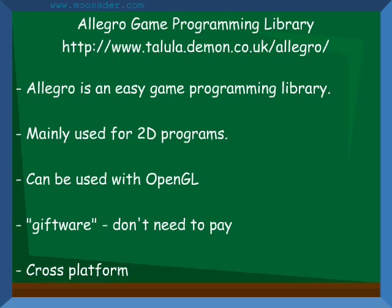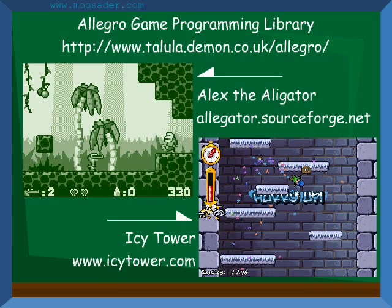Allegro is also cross-platform, meaning that it can be compiled under Windows, Linux, Mac, and other operating systems, so long as you don't use any OS-specific code, such as the Winsock library for network programming. Some games made with Allegro are Alex the Alligator and Icy Tower.